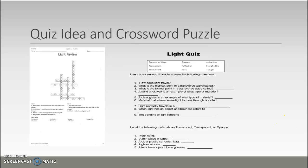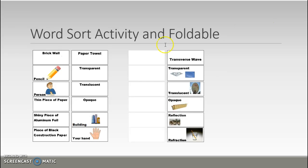Once students finish the foldable activity, you would distribute the pre-cut and pre-sorted word sort activity to students in pairs. They work together to sort a list of objects into the categories transparent, translucent, or opaque, deciding which category each item belongs to.